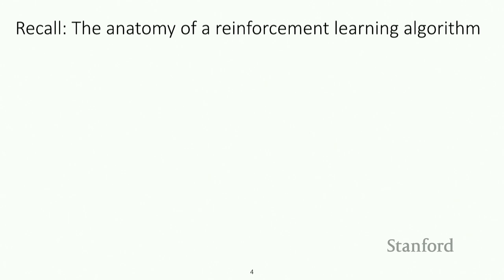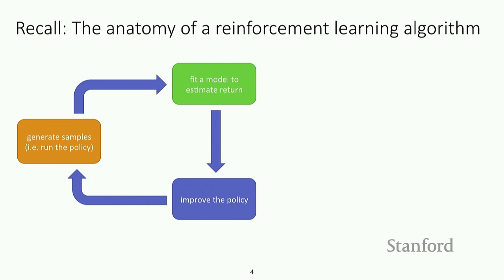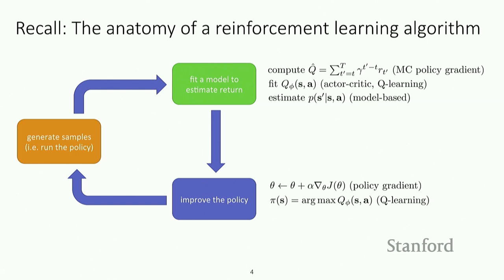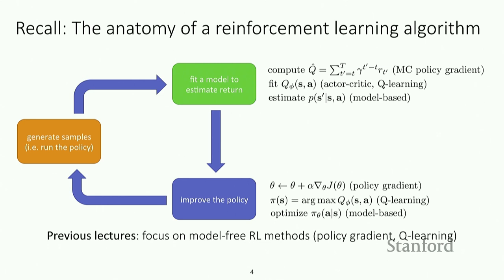Let's talk about reinforcement learning algorithms from a broader view. In previous lectures, we showed a diagram where RL iterates between generating samples, fitting a model to estimate the return, and improving the policy. We talked about Q-learning-based and policy gradient-based methods that correspond to estimating the return or fitting a Q-function. In contrast, model-based approaches try to fit a model of the dynamics, and then improve the policy by applying the policy gradient, taking a max over the Q-function, or optimizing the policy parameters using the model.